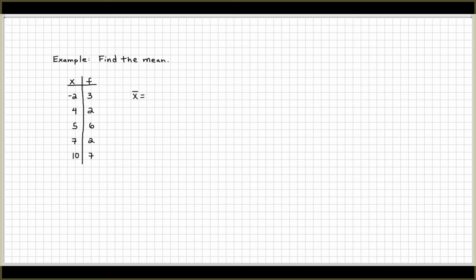So again, we're looking for the sample mean. And what we want to do is we want to multiply the observation negative 2 by how many times it occurs. It's kind of like a faster way of adding, right? Multiplying.